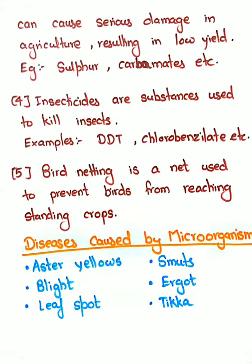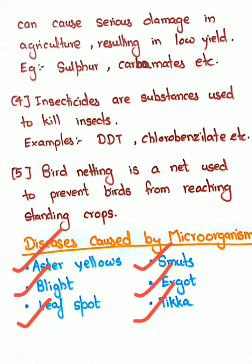Next is diseases caused by microorganisms. Which diseases can happen in crops due to microorganisms? These include Aster yellows, blight, leaf spot, smuts, ergot, and tikka. These are some diseases found in plants caused by microorganisms.